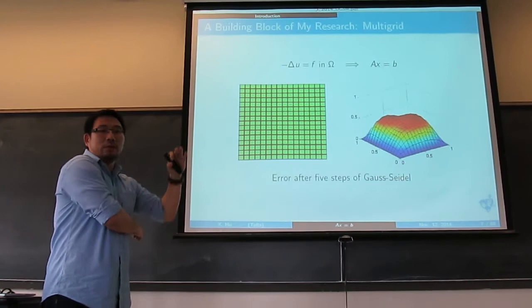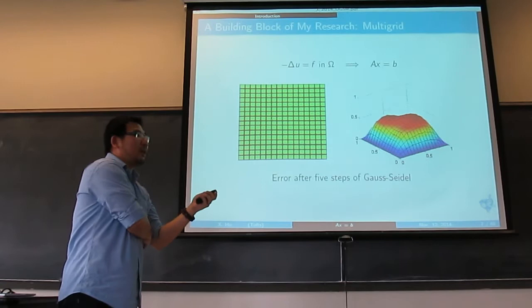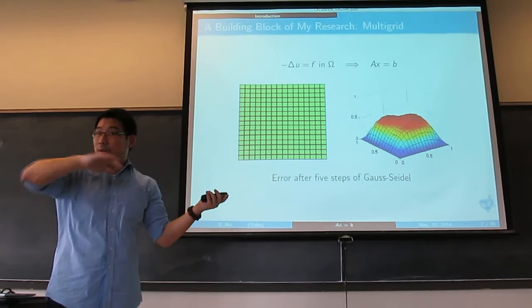If I do five steps of Gauss-Seidel, the magnitude doesn't change much — the height is still 0.5. But the profile for the error is much smoother than before. When you have such smoothness, you can see the oscillatory part has been taken care of — it's gone. What's left is the smooth part.